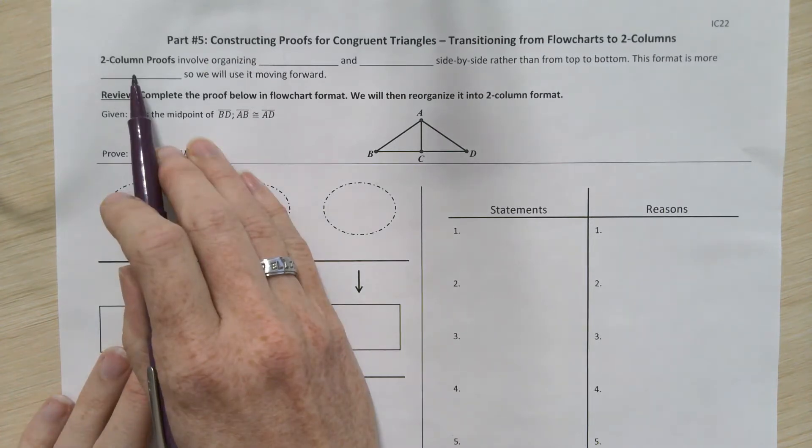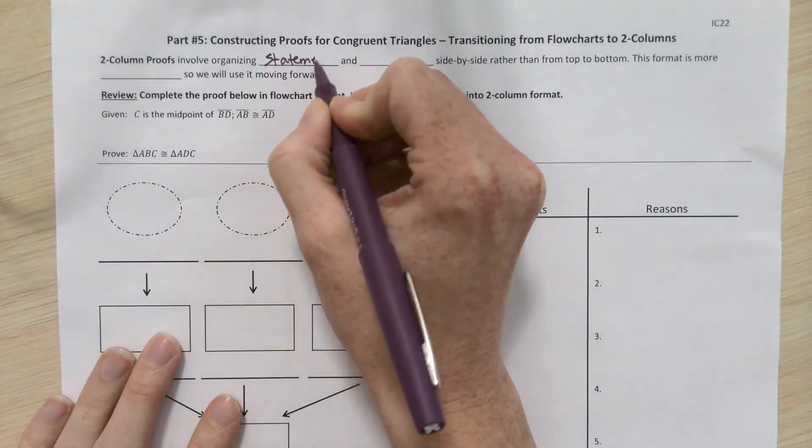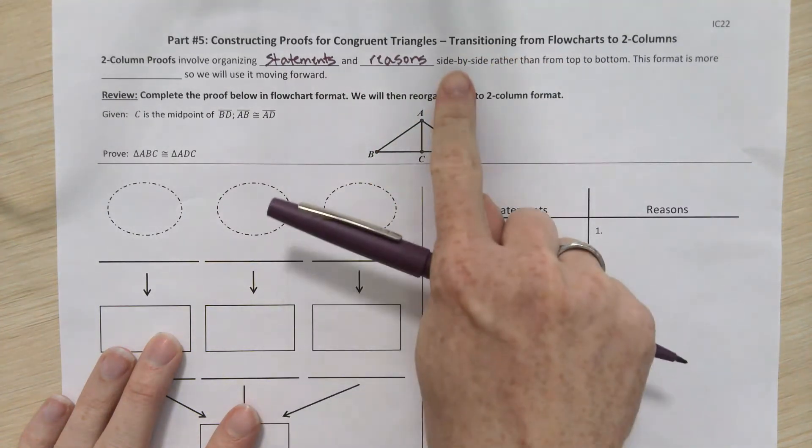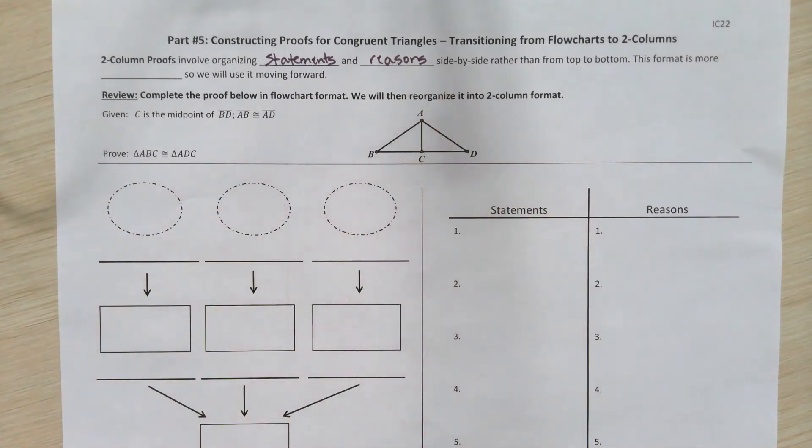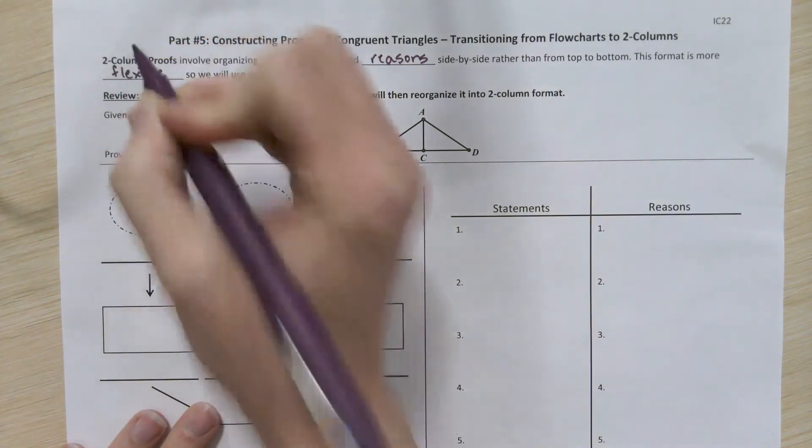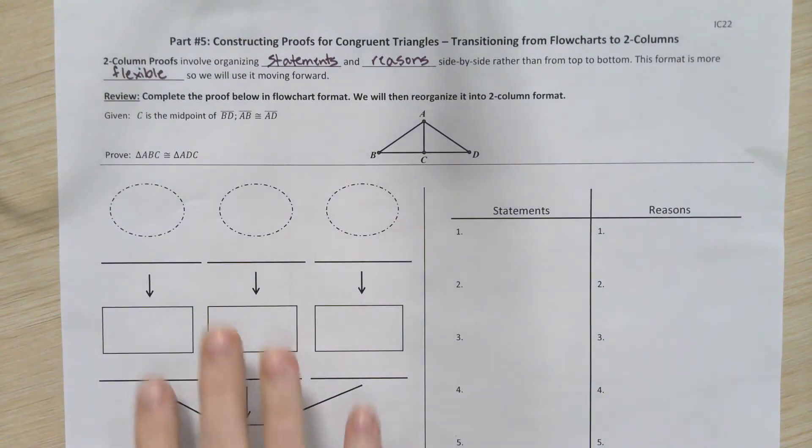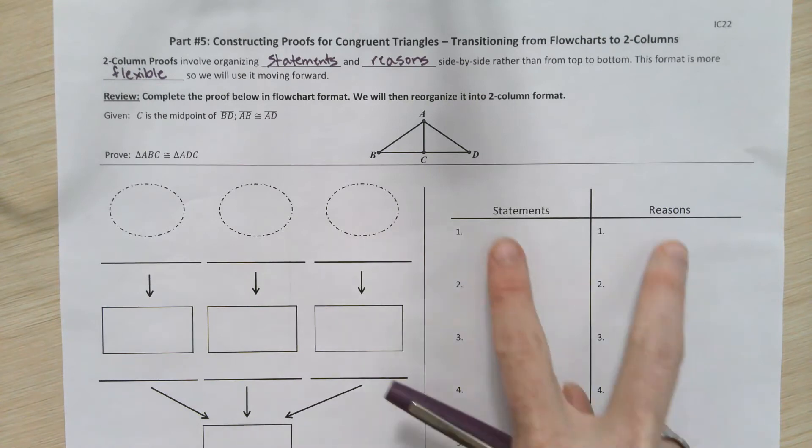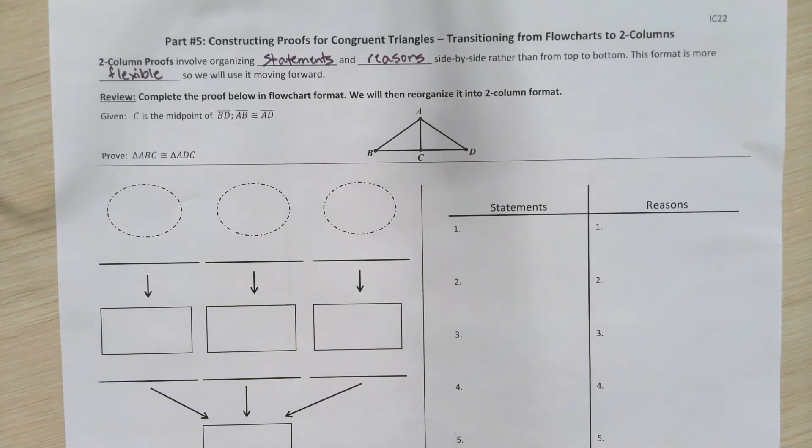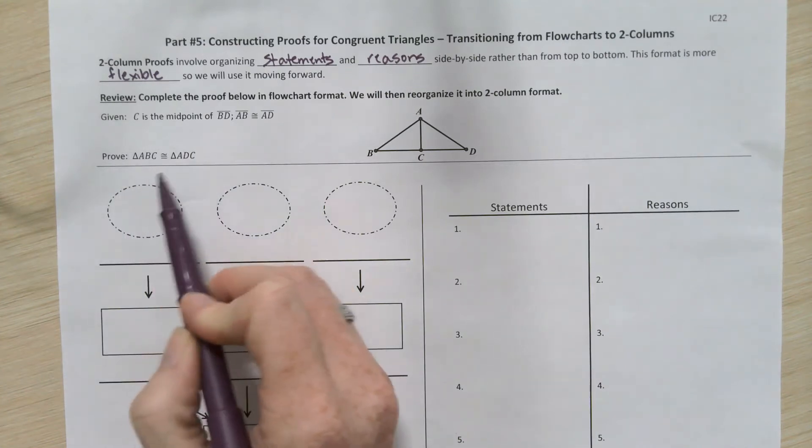They are going to involve organizing the statements and the reasons that we've already been practicing in our flowchart proofs, but they are organized by side rather than from top to bottom like they are in a flowchart. The reason why we transition to two-column proofs is because this format is more flexible. We're going to pretty quickly move into proofs that don't fit this kind of three bubbles, three boxes, one box at the bottom format. Flowcharts will be a little bit more time-consuming or tricky to use, but no matter what proof we do, we're always going to be able to just list in a logical order statements and reasons side by side to support whatever concept or idea we're trying to prove.